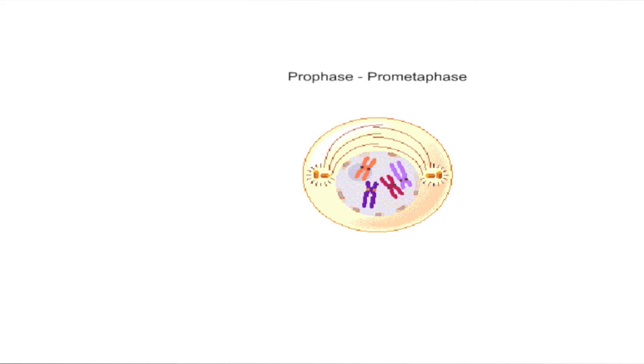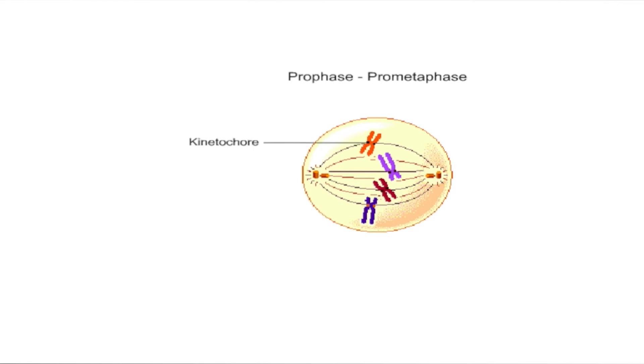Near the end of prophase, the nuclear envelope breaks down and the nucleolus disappears, signaling the beginning of the substage called prometaphase. The microtubules now enter the nuclear area and attach to the sister chromatids at a region near the centromere called the kinetochore.